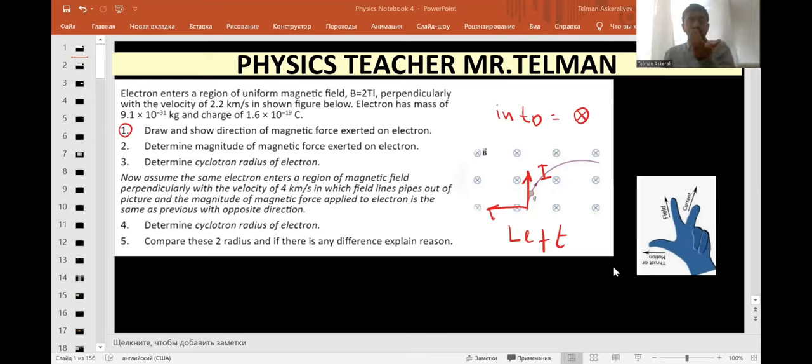So the index finger is in the direction of the magnetic field. The three fingers are in the direction of up and then the thumb is showing the direction of magnetic force. So that you will get the direction of the magnetic force to the left.